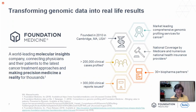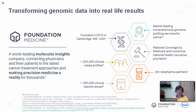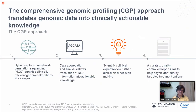Transforming genomic data into real-life results is important. Foundation Medicine is a market-leading comprehensive genomic profiling service for cancer worldwide. It was founded in Cambridge, USA in 2010. National coverage by Medicaid and numerous health insurances has been established. FMI is approved in some private insurances. There is evidence of more than 2 lakh clinical cases profiled, 30-plus biopharma partners, and more than 3 lakh clinical reports issued — a huge bank of mutation data — with multiple publications.